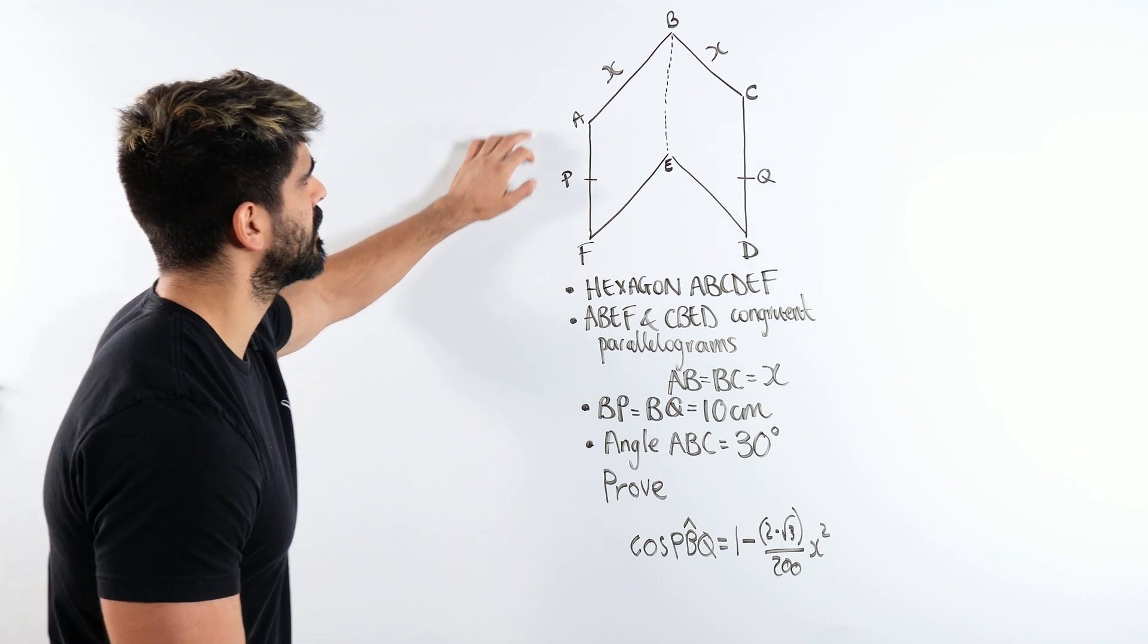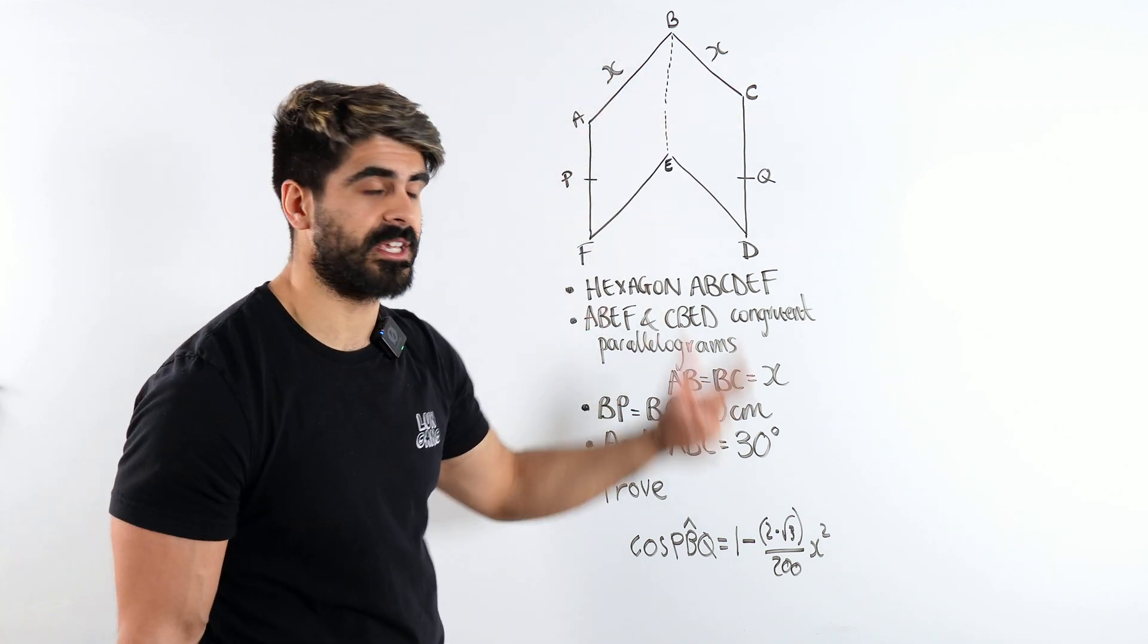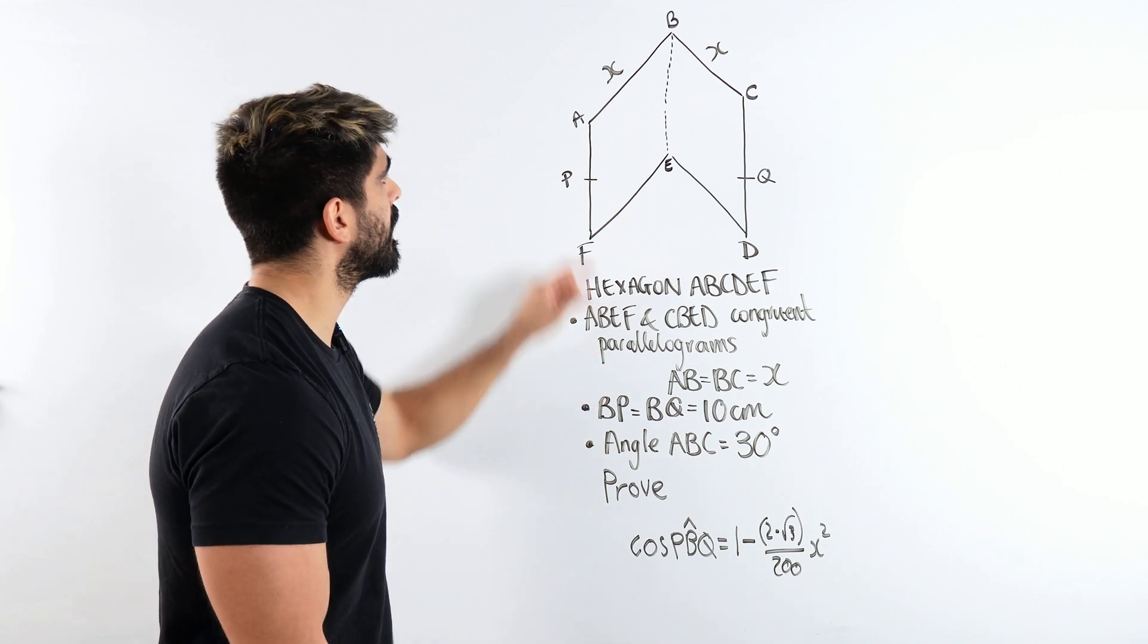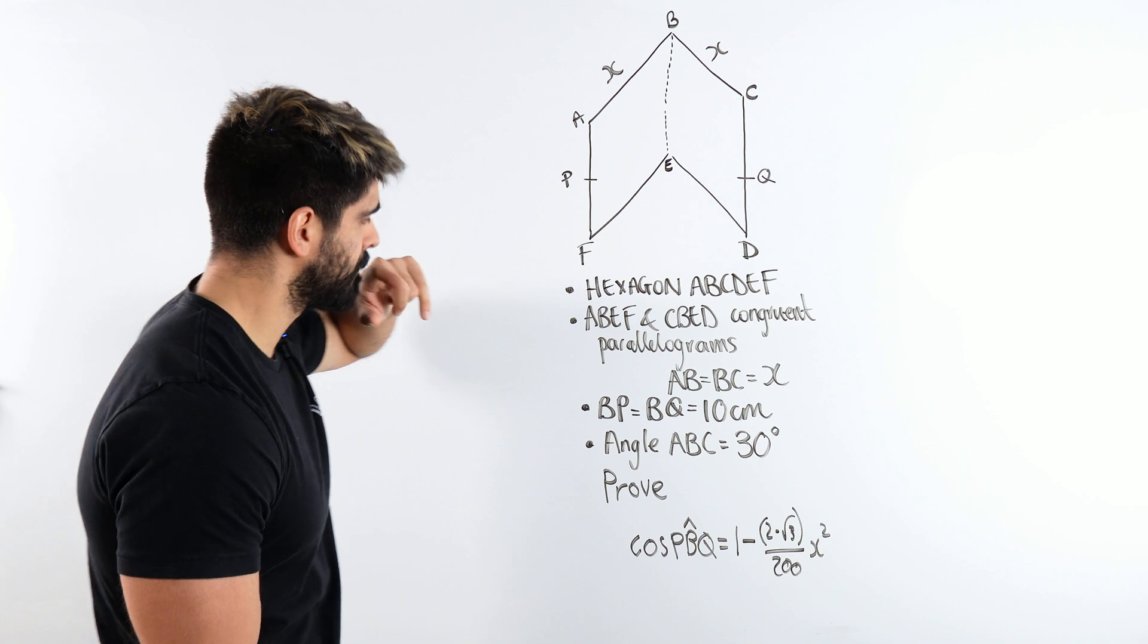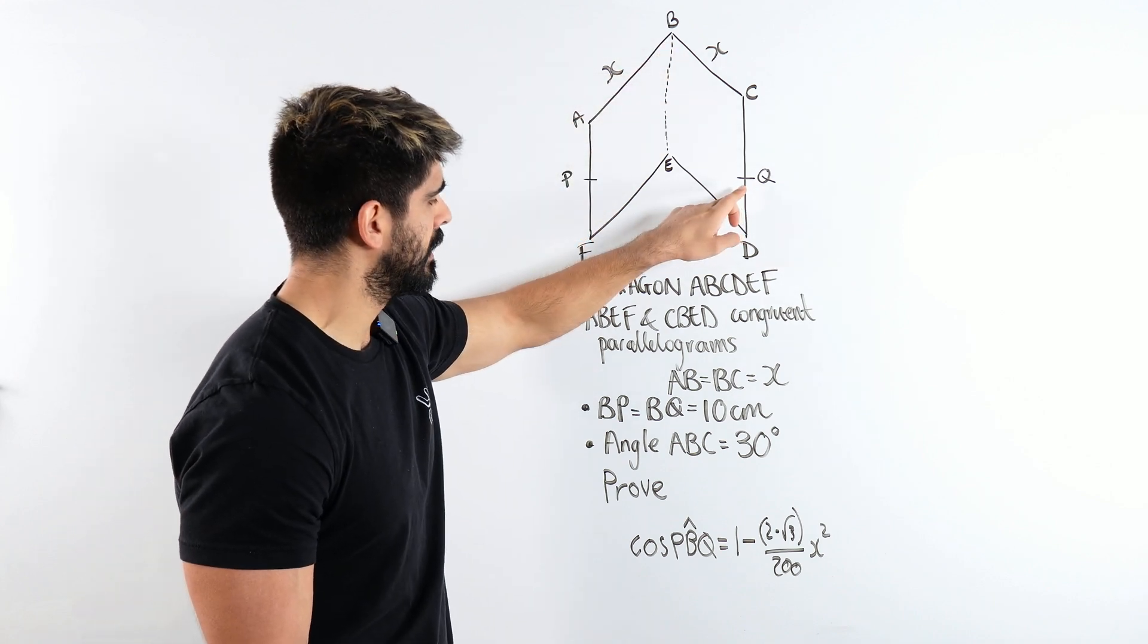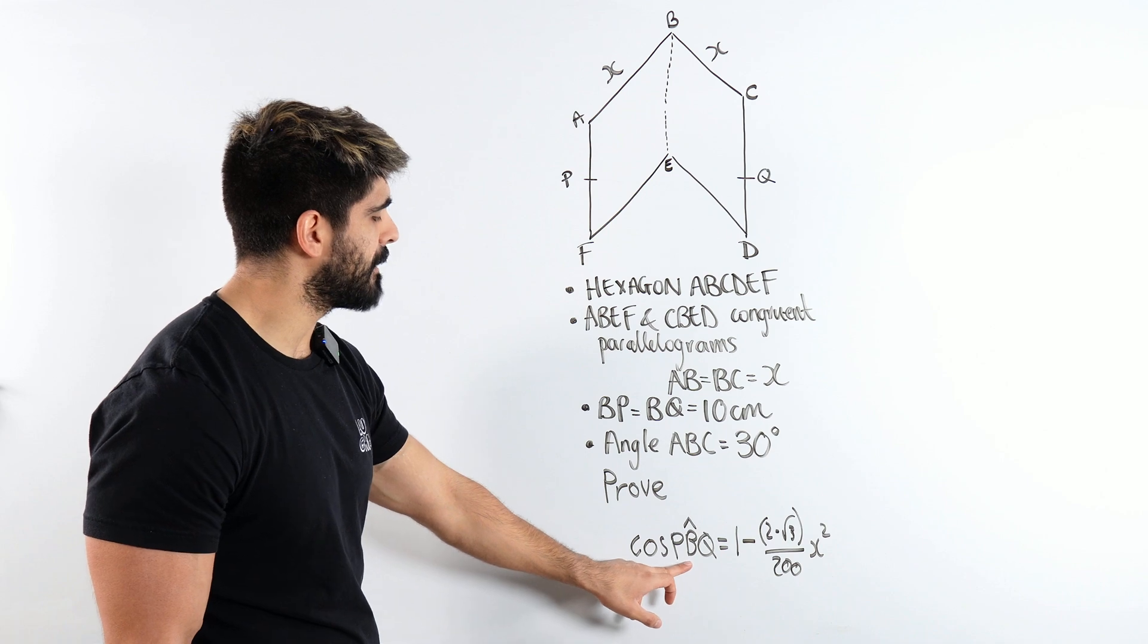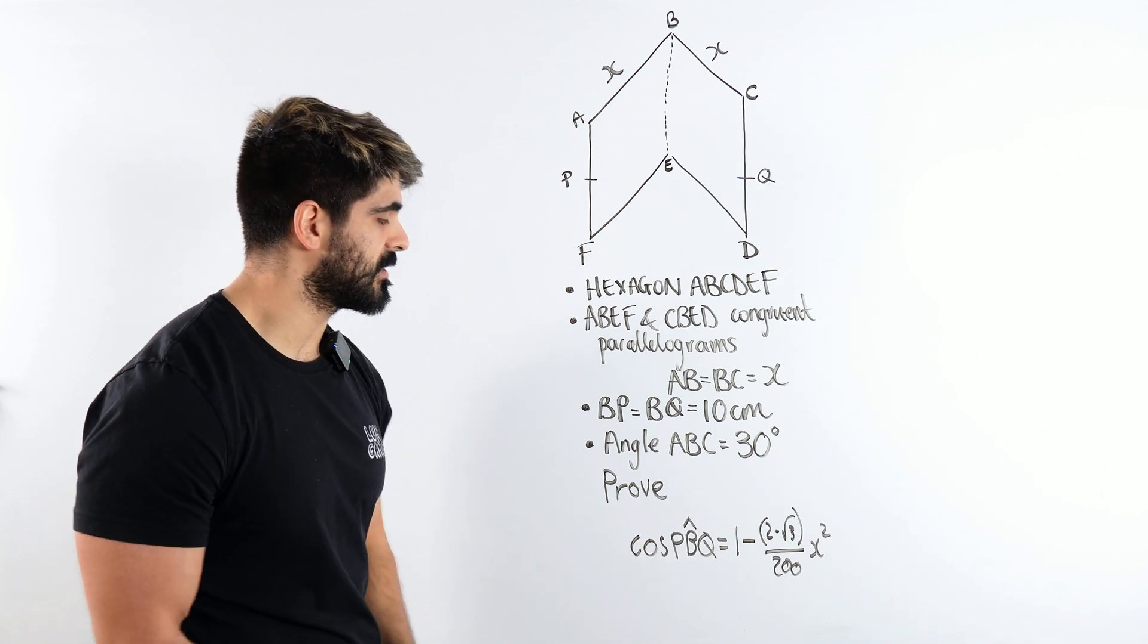So we have a hexagon ABCDEF. It's been divided down the middle into two congruent parallelograms. AB and BC are X. We've got BP and BQ are 10. Angle ABC is 30. Prove that the cosine of the angle at B that connects P, B and Q is this.